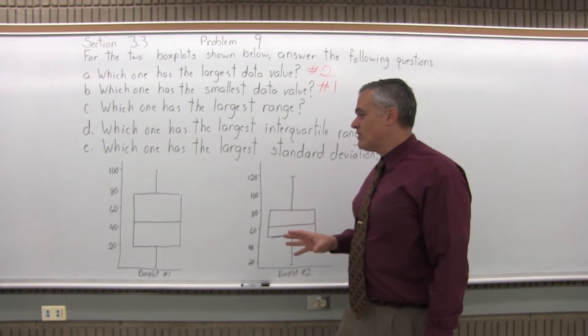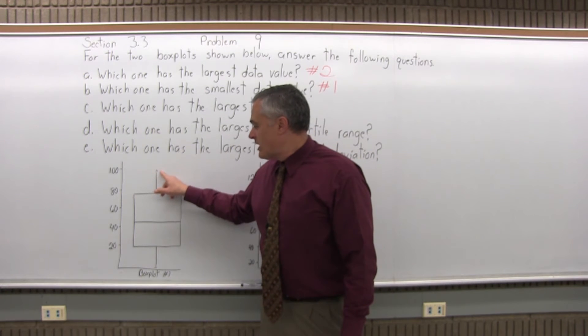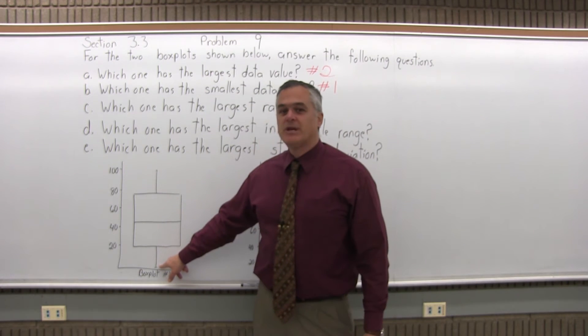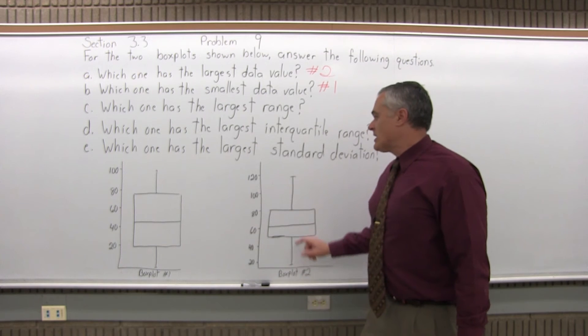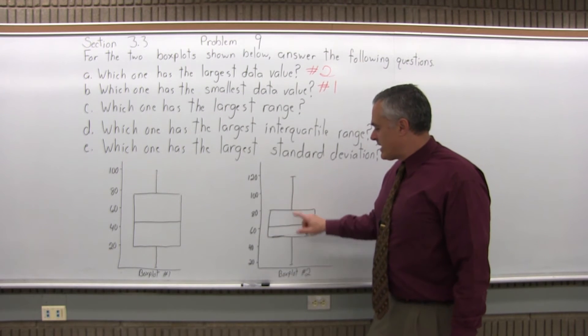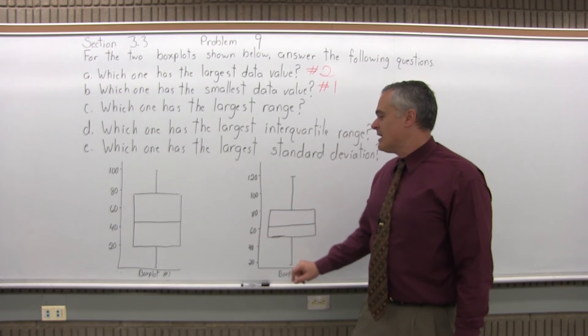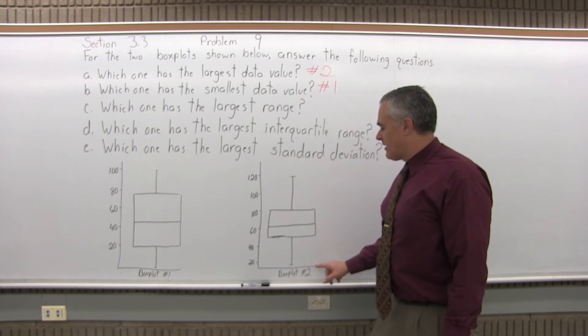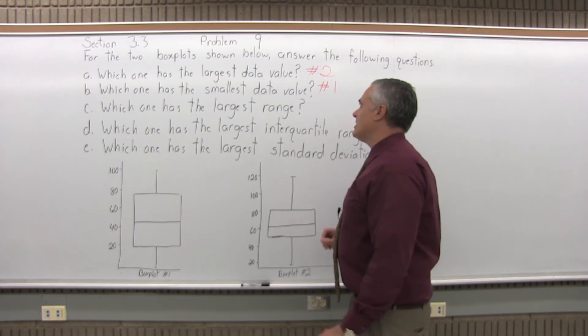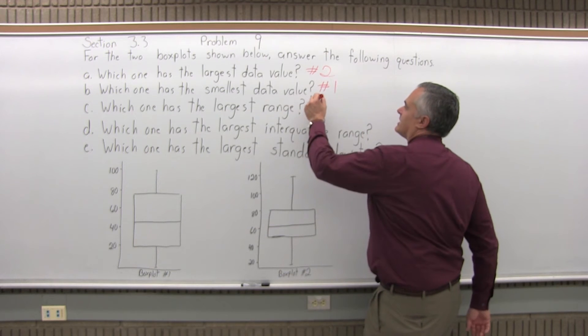box plot number one from 100 to almost zero should be in the upper 90s. Box plot number two going from 120 to a little lower than 20 would be a little more than 100. So the range is slightly bigger for box plot number two. Not much. You really have to pay attention to the number scale.